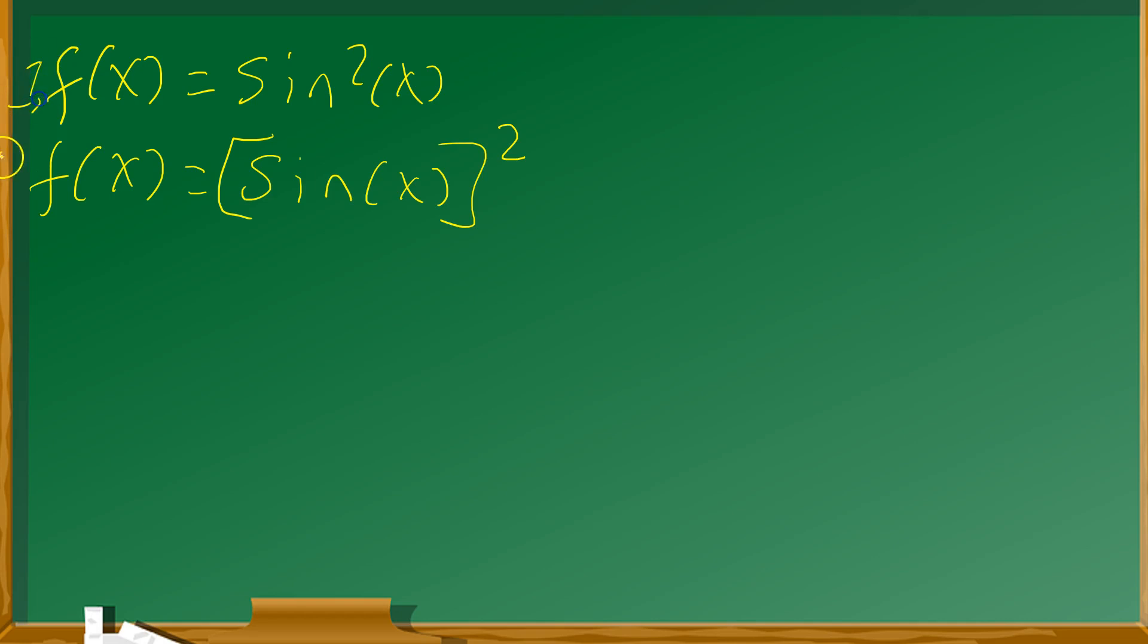Once you've recognized that basic fact, you can apply the chain rule. So f'(x) - you differentiate the outside. In this case, you use the power rule for the outside. You put the two down, you copy the inside, which is just sin(x), and then up here you do 2 minus 1, you subtract 1 from the exponent.